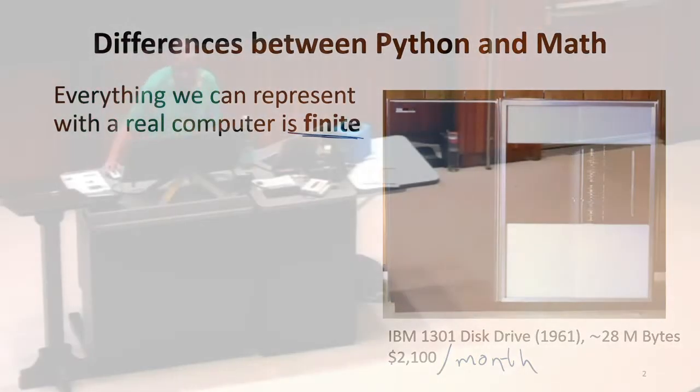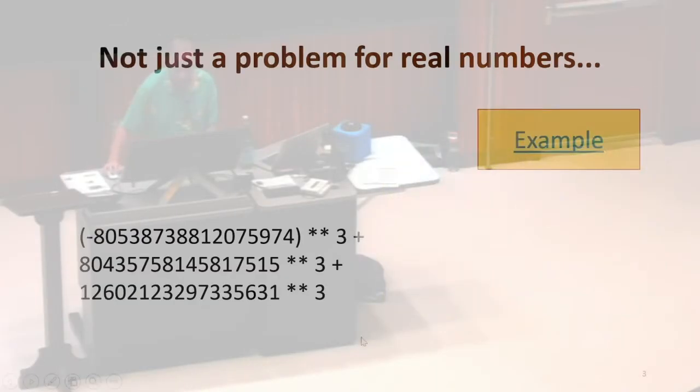This has real implications. I will show one example. This is perfectly good math. It's a little funny notation because I'm using Python notation, but we're cubing three numbers. Does anyone know what they add up to? You can do that in your head. Excellent. Someone's been paying attention to the number theory news, or is really good at calculating.